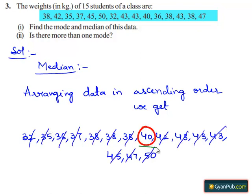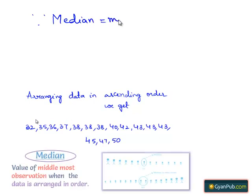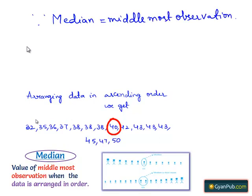Here 40 is the middlemost observation. Since median is equal to the middlemost observation, therefore 40 kg is the median.